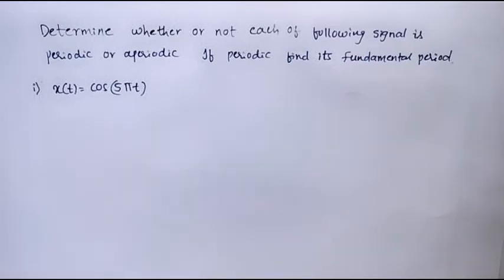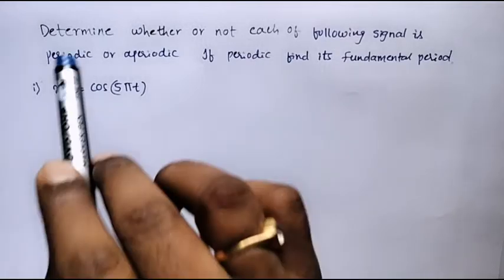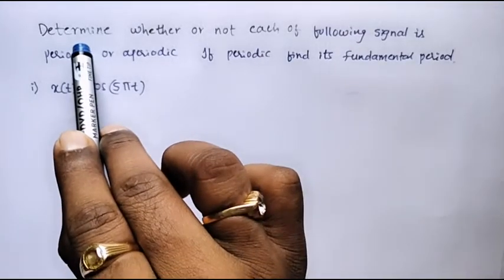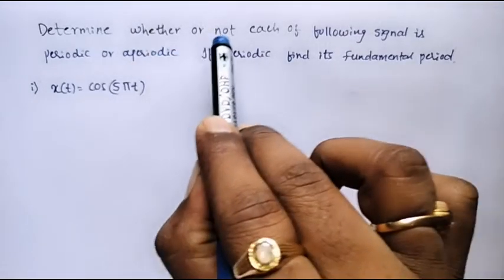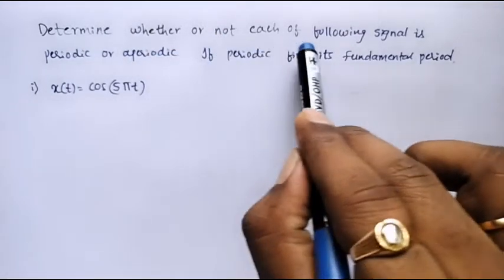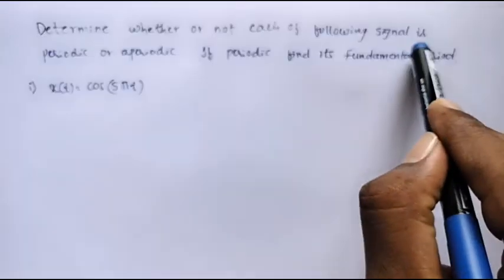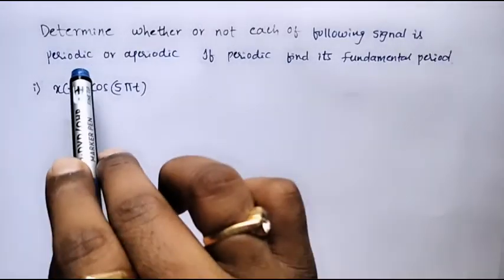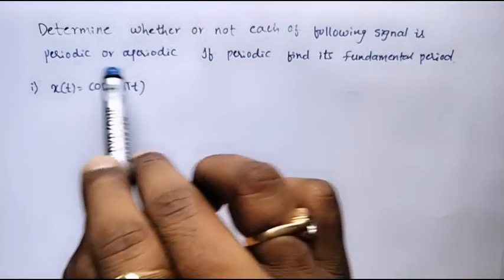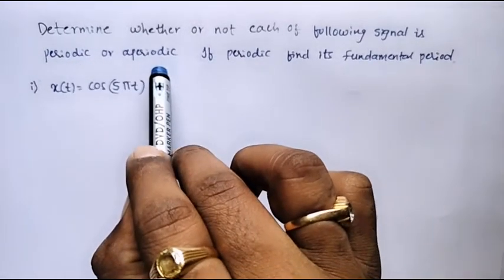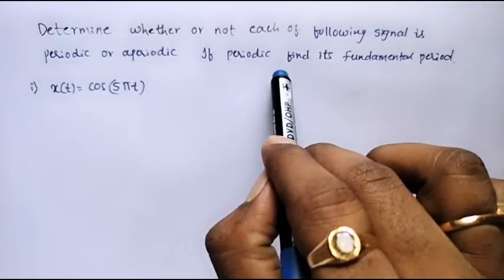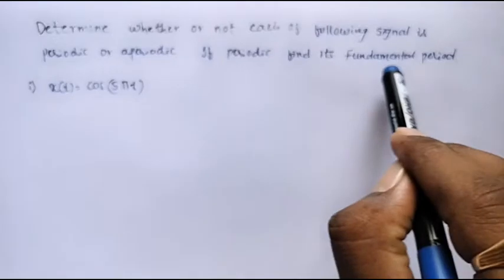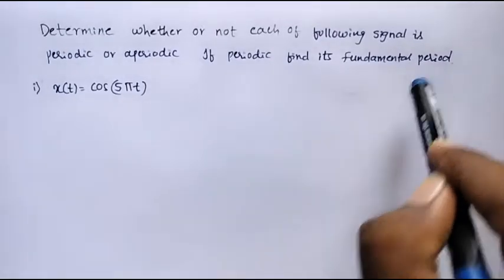Let us take one example on periodic and aperiodic signals. Determine whether or not each of the following signals is periodic or aperiodic. If periodic, find its fundamental period.